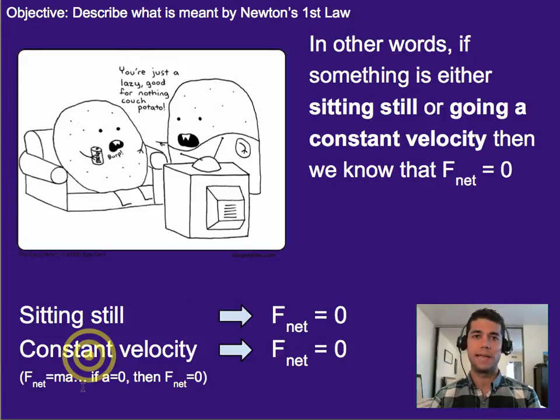And while this one might be counterintuitive, let's walk through the math behind it real fast, because that might help explain it. We know that net force equals mass times acceleration. And we know if something is a constant velocity, the velocity isn't changing. So if the velocity isn't changing, then the acceleration is zero, because acceleration is change in velocity per time.